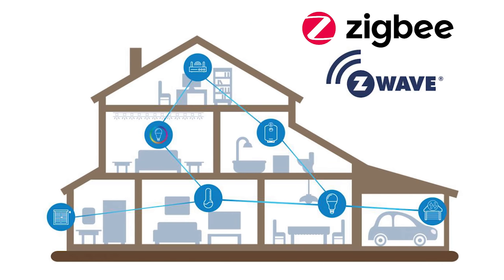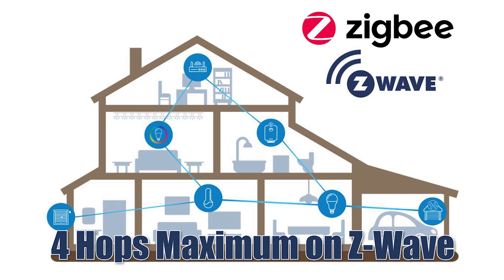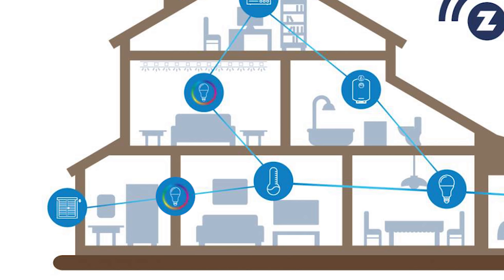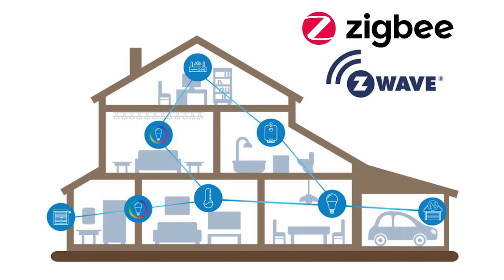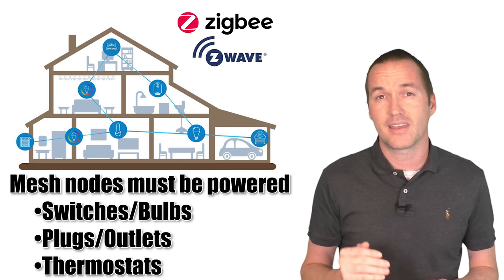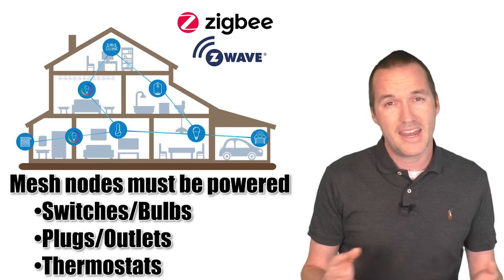Both Zigbee and Z-Wave form a mesh network, where they extend the range of the signal by relaying information from one device to the next in order to make it back to the hub. Best case, this relay process extends the device's range while only introducing a minor delay, but as the number of relays or hops increases, the delay can become very noticeable. Z-Wave limits devices to a maximum of 4 hops, while Zigbee has no hard limit. You may also need to intentionally place devices in intermediate locations to extend the mesh, and these mesh devices must have constant power — things like light bulbs, plugs, and switches — not battery-powered sensors.